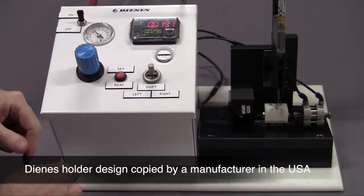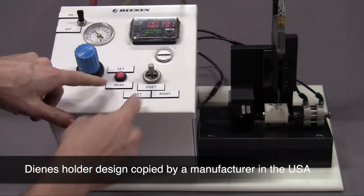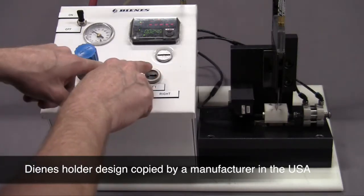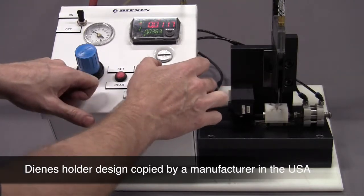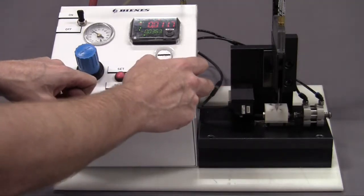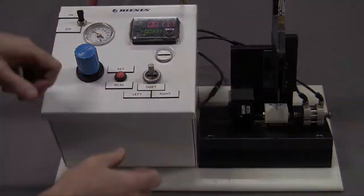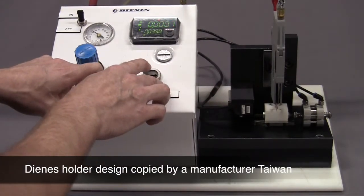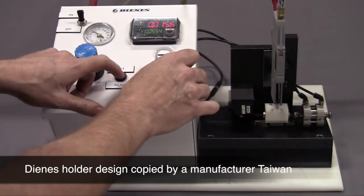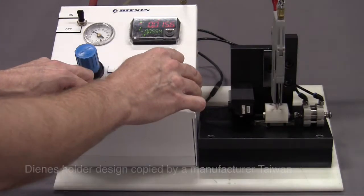This is another comparator's holder. Zero out the gauge. 11 thousandths. Here's another comparator's holder. Zero out the gauge. 15 thousandths worth of vertical play.